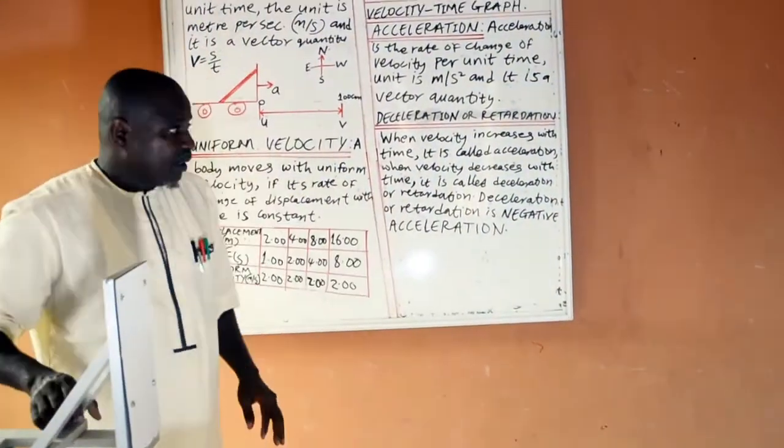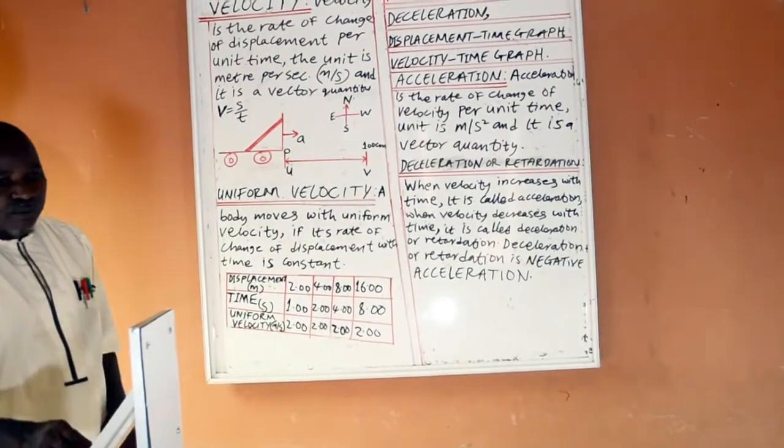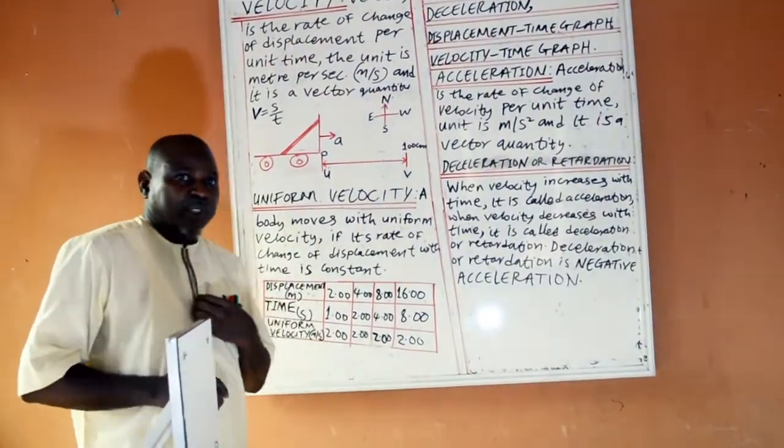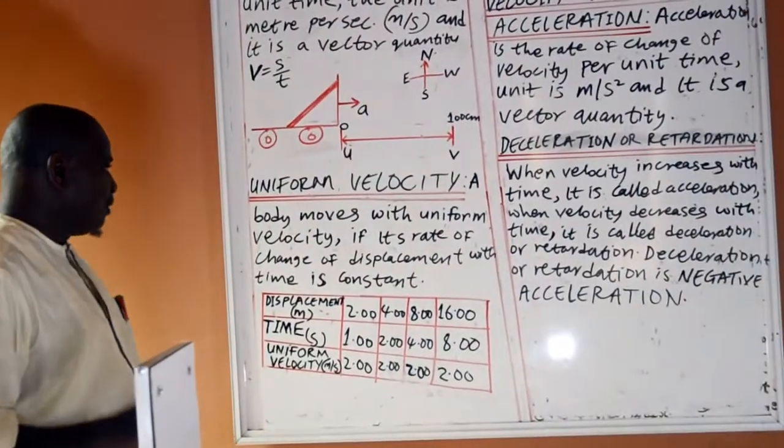Uniform velocity. A body moves with uniform velocity when its rate of change of displacement with time is constant.